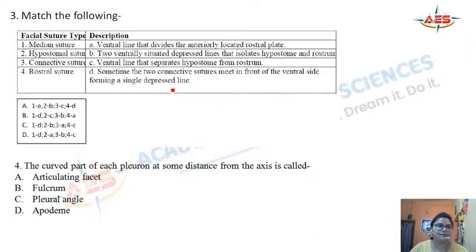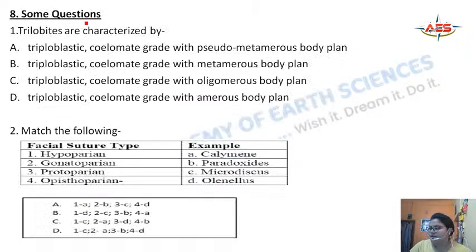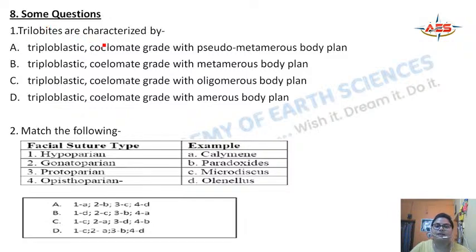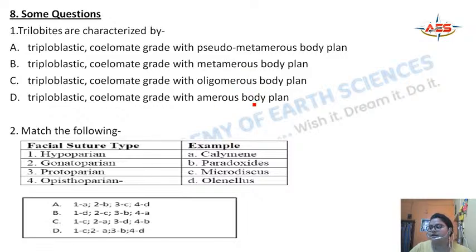Please write the question number before your answer. Question 1: What is trilobite's grade and body plan? Triploblastic means three body wall layers; Coelomate means a well-developed body cavity; Metamerous means segmented along its length. So the answer involves identifying which body plan applies to trilobites.